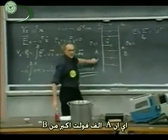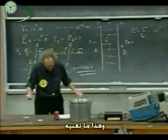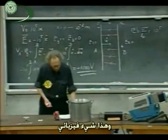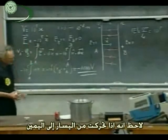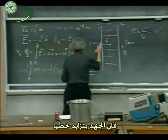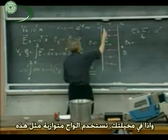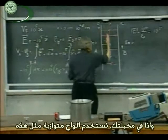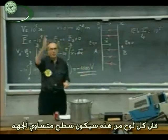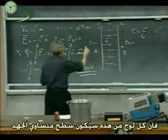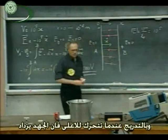So A is one thousand volts lower than B. That's what it means, and that's something that's very physical. Notice that if you go from left to right, the potential grows linearly — this is lower than that. If you choose planes parallel to the other planes, each one of those planes will be equipotentials — they everywhere have the same potential. And gradually, when you move it up, your potential increases.